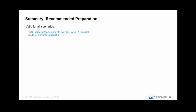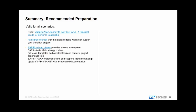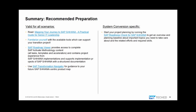To summarize the key takeaways: first, I mentioned the document 'Mapping Your Journey to SAP S/4HANA,' which gives a written summary of this session. Second, familiarize yourself with the available tools supporting the transition project. The SAP Roadmap Viewer provides access to the complete SAP Activate methodology with all necessary tasks, skill levels, and information about available SAP services. The Transformation Navigator guides you in mapping your current system landscape to a future S/4HANA-centric landscape.